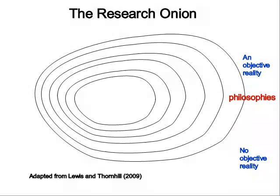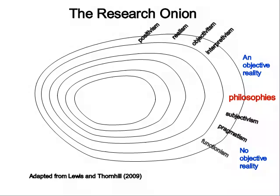Those accepting there is an objective reality will more likely adopt a positivist, objective, or interpretative perspective. Those arguing there is no objective reality will adopt a more epistemological position that is subjectivist, pragmatic, functionalist, or either a radical humanist or radical structuralist.